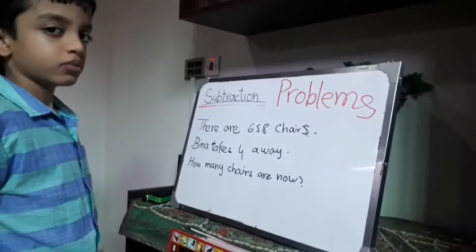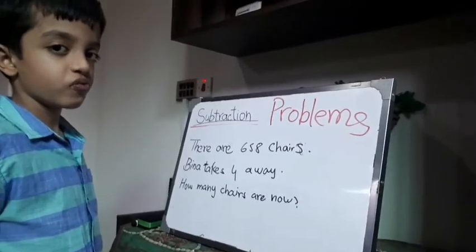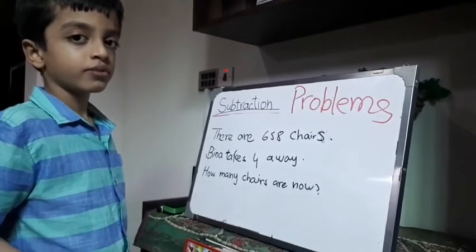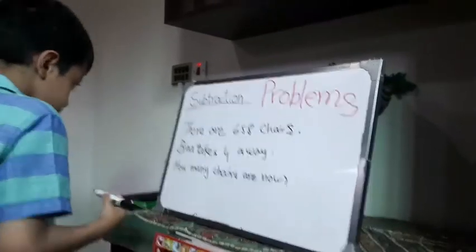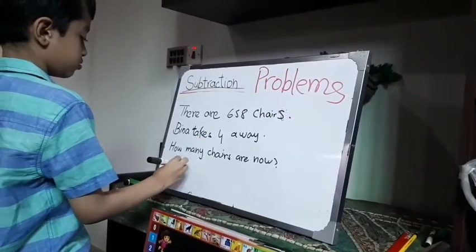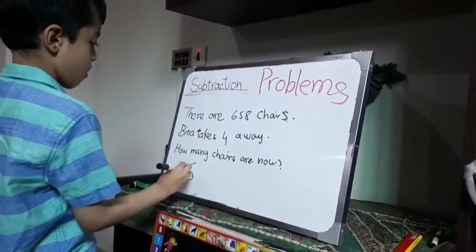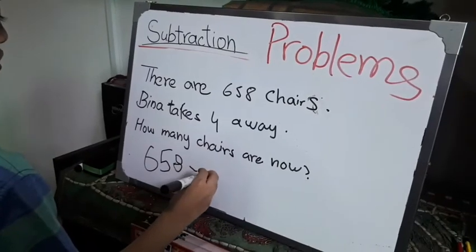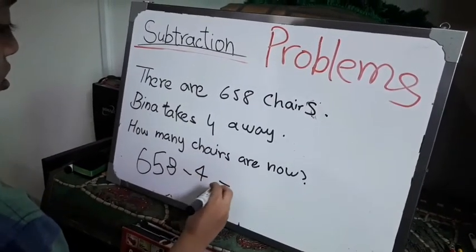There are 658 chairs. Bina takes 4 away. How many chairs are there now? We solve 68 minus 4.